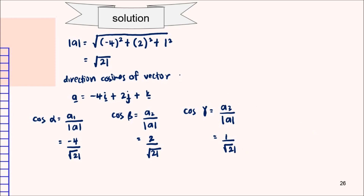This is the solution for finding the direction cosines of a vector.